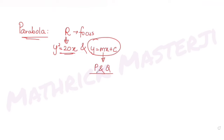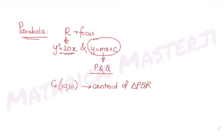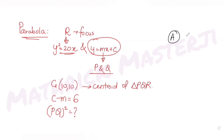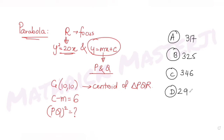The question further tells us that point G(10, 10) is the centroid of triangle PQR. Given that c minus m equals 6, we need to find the value of PQ². The answer choices are 317, 325, 346, and 296.